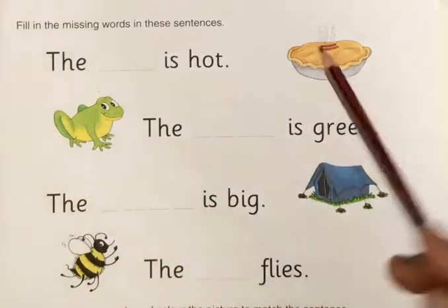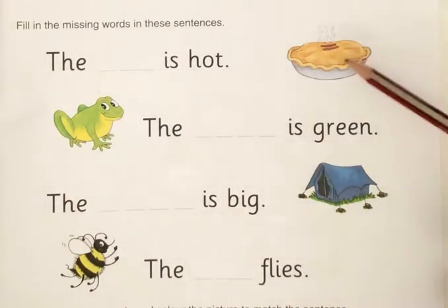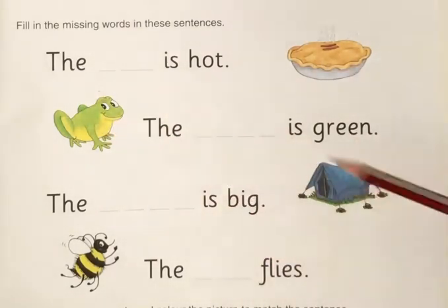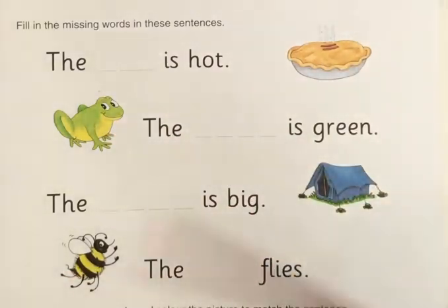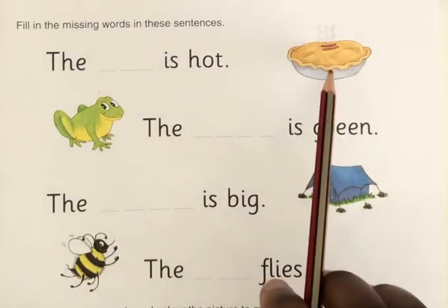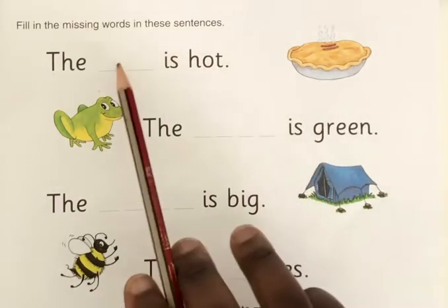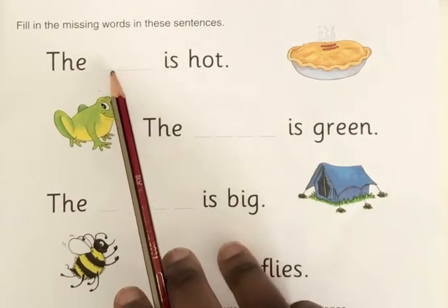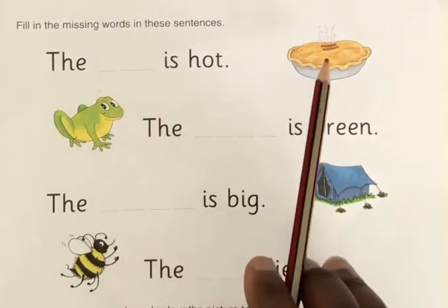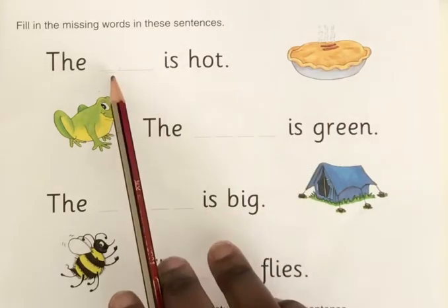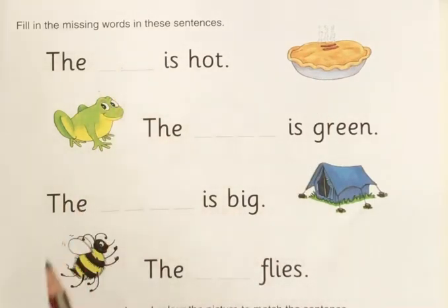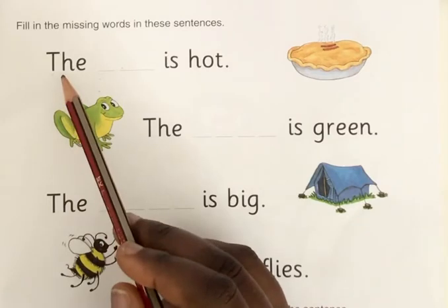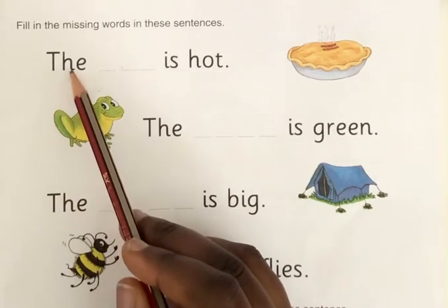Beside each sentence there are pictures. You have to know the name of the picture to be able to write the word in the blank space. The name of the picture is the missing word that you have to write in the blank space.